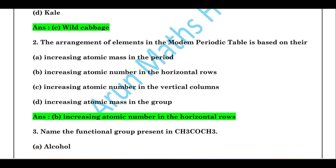The arrangement of elements in the modern periodic table is based on their increasing atomic number in the horizontal rows — that is, periods. There are 7 periods and 18 groups. Across the period, there is an increase in the atomic number.